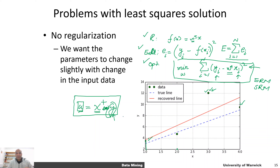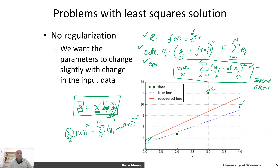We want the classifier to have a small norm of w, so that a small change in the input x doesn't cause a large change in the output — since the output is determined by a dot product with w. A better representation would have a regularization term plus an error minimization term: we can add a regularization control parameter lambda, giving us a structural risk minimization based regressor.